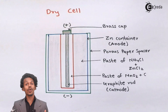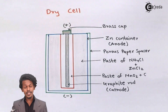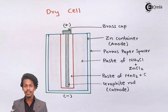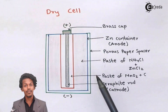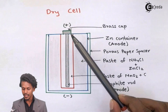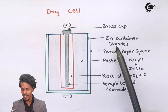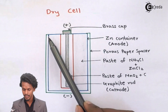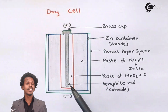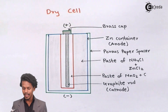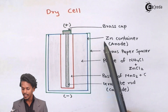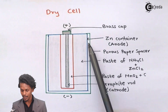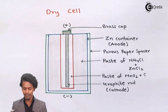Let us talk about the dry cell. This is the schematic diagram present on your screen. As you can see, this is a dry cell which consists of a main zinc container in a cylindrical form, and a porous paper spacer is also kept above it.